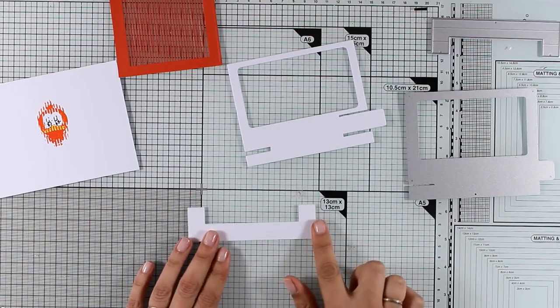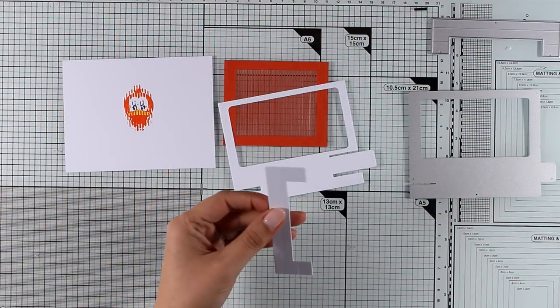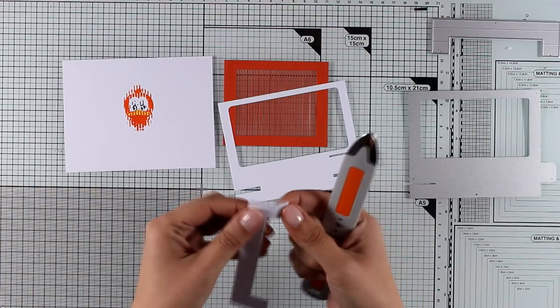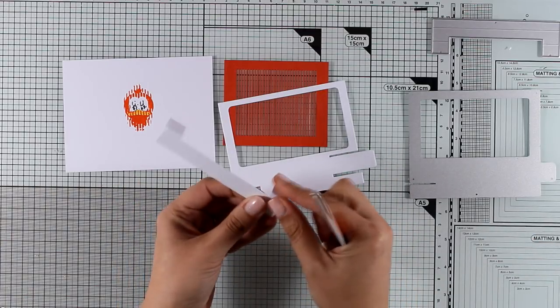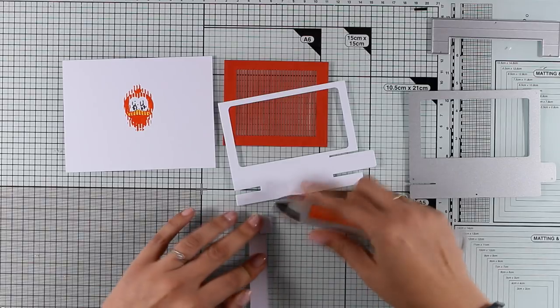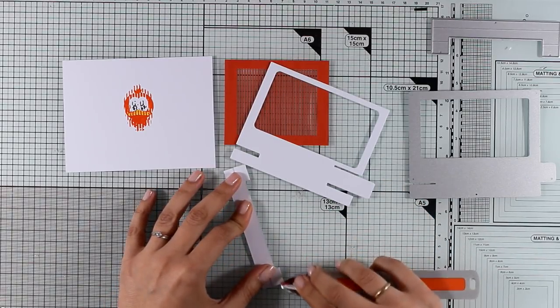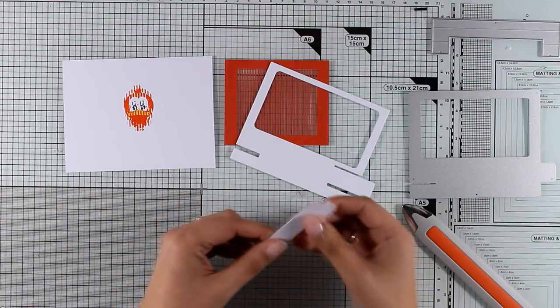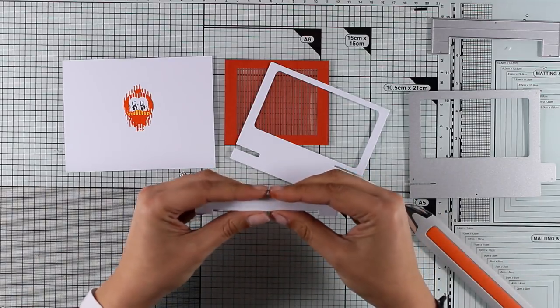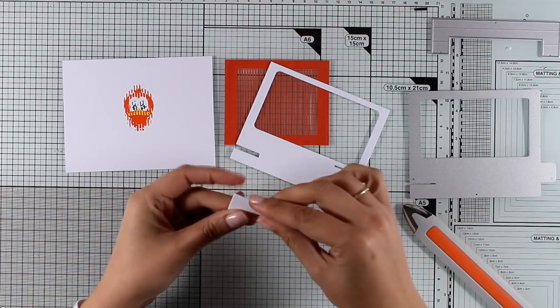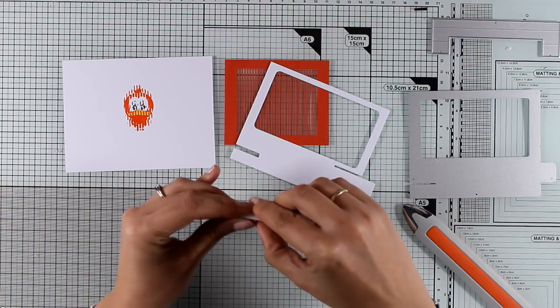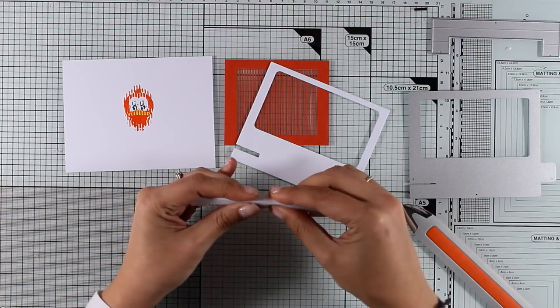It gives you lots of dies - two of them are the main dies that you need, these are the two I have here. To put them together you need to make sure that you fold on every little crease. When you use those dies they actually create those scoring lines for you.